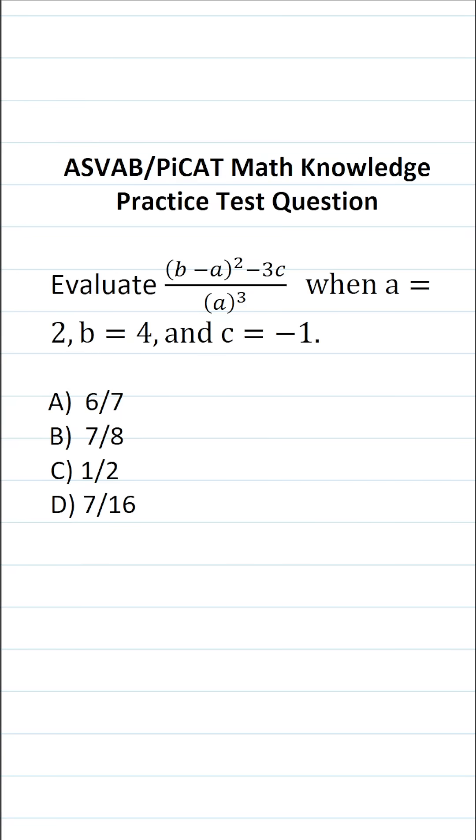This math knowledge practice test question for the ASVAB and PiCAT says evaluate b minus a squared minus 3c all over a to the third power when a equals 2, b equals 4, and c equals negative 1.